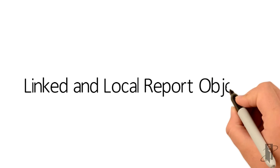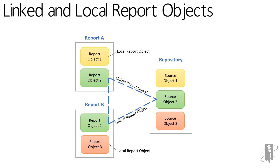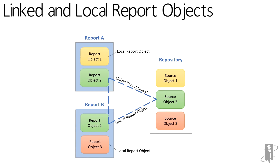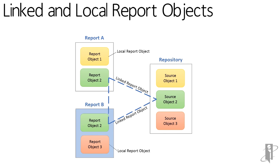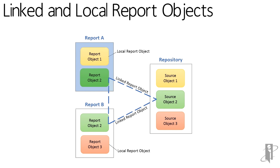Now let's take a look at an example of linked versus local objects. As you can see, the repository currently includes three source objects. Report A and Report B include different objects from the repository. In Report A, Report Object 1 is copied from the repository as a local object. Report B also includes a local object, Report Object 3. Changes made to either of the local report objects are not reflected in the source object. Notice in Report A that Report Object 2 is linked to its source object in the repository. Changes made to Report Object 2 when saved are reflected in the source object and other reports that are linked to that source object, including Report Object 2 in Report B.